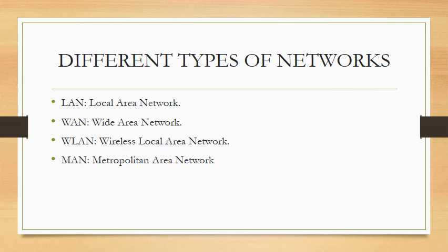Different types of networks: LAN, also known as a local area network, usually used in small businesses. WAN, a wide area network, usually used in an entire business or organization. Wireless local area network, and metropolitan area network, usually used across cities or big states.